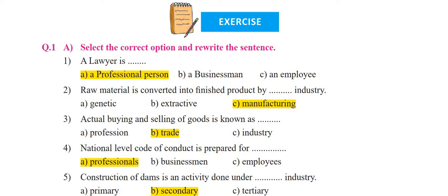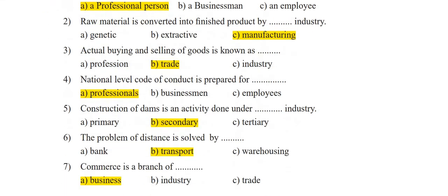Third: 'Actual buying and selling of goods is known as ___.' The actual process of buying and selling is called trade. The correct answer is B — trade. Fourth: 'National level code of conduct is prepared for ___.' A national level code of conduct is made for professionals — lawyers, doctors, etc. The correct answer is A — professionals.